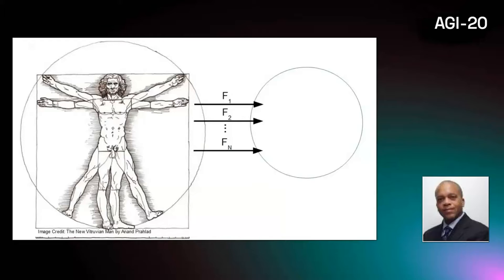This approach begins by defining some set of functions, F, as representing all functions of the human system that exist from a human-centric point of view — that is, all functions that are observable within innate human awareness.